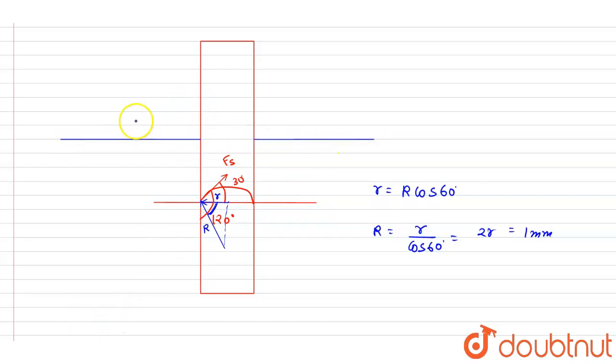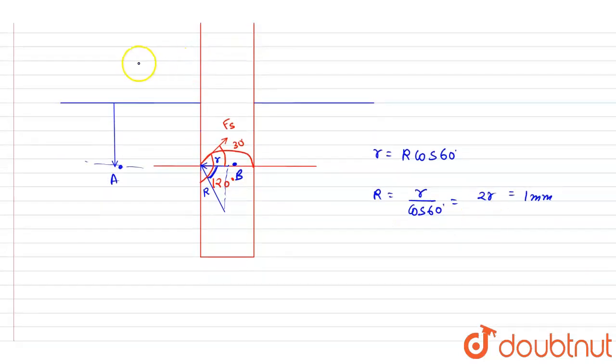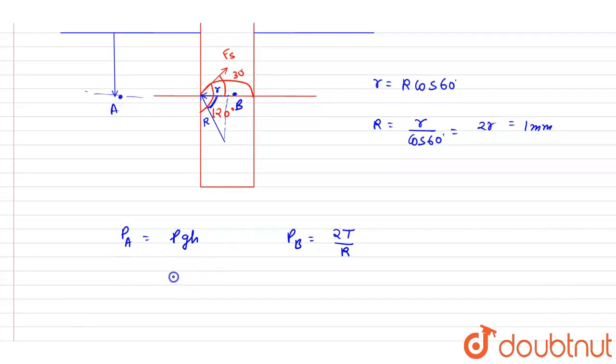So now you can equate the pressure at these two points since they are in the same horizontal level. And you have to go h distance below to come to point A and here you have to cross this. So let's say the atmospheric pressure is zero, so I will write down the pressure at A equals rho g h, and pressure at B will be the pressure gain when you cross a curved surface in a liquid. The pressure gain is 2T by R.